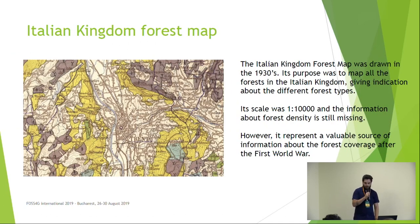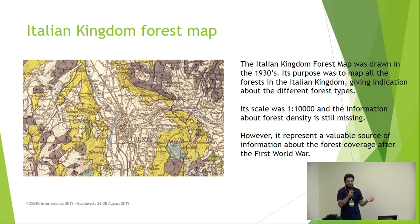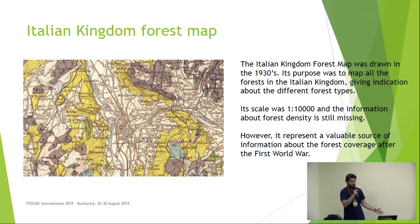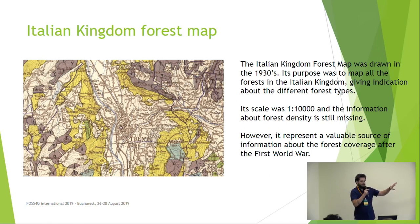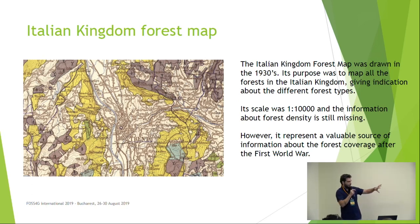Then we have the 1930 Italian Kingdom forestry map, which is also a sort of cadastral map. Here the ambitious project by Mussolini was to map all the forests in Italy, and they managed to do that at a larger scale — about 1 to 100,000. The background color here indicates a type of forest: pine forest, chestnut forest, beech forest, and so on. The white background color we are not really interested in.